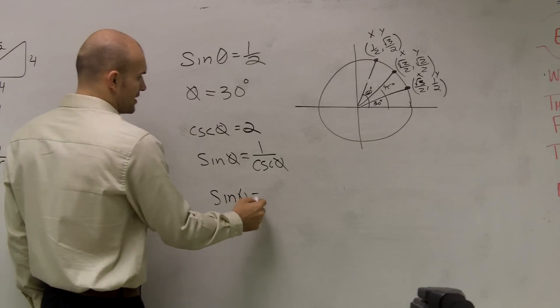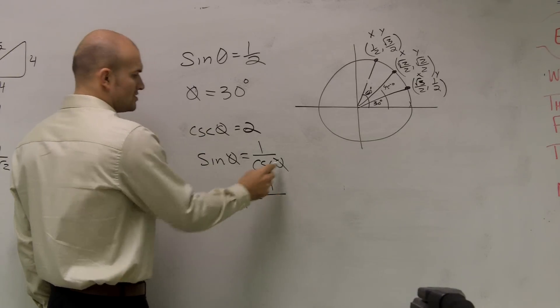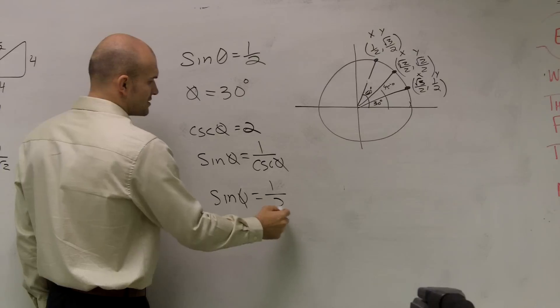Cosecant of 2. So, therefore, it's going to equal 1 over cosecant of theta, which is 2.